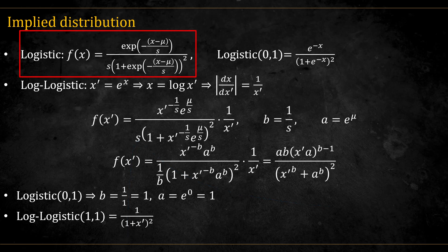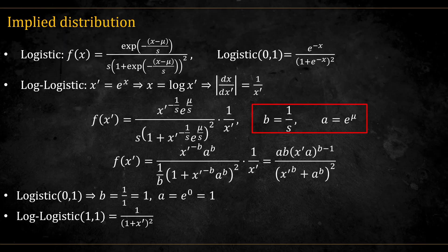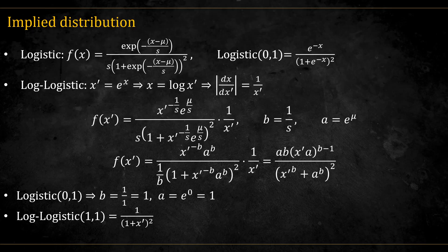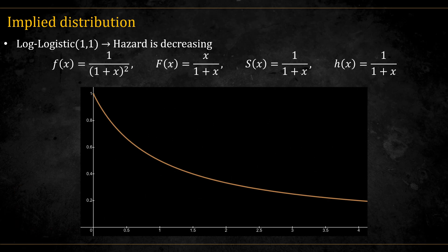Here we can see the derivation for the log logistic function. This is the PDF of the logistic distribution. If we change variables, we get the following PDF. And if we transform the parameters, we end up with this PDF. Note that this is equivalent to the form shown in Wikipedia at the time of making this video, which is simply dividing the numerator and denominator by a to the power of 2b. The logistic 0, 1 distribution translates to the log logistic 1, 1.